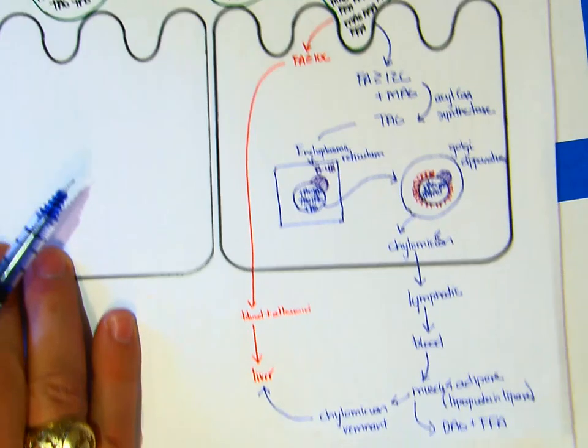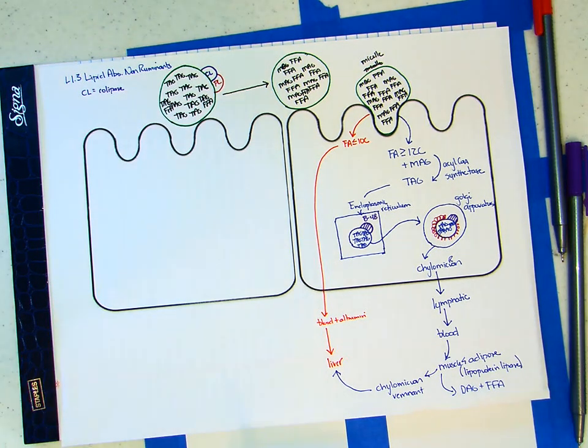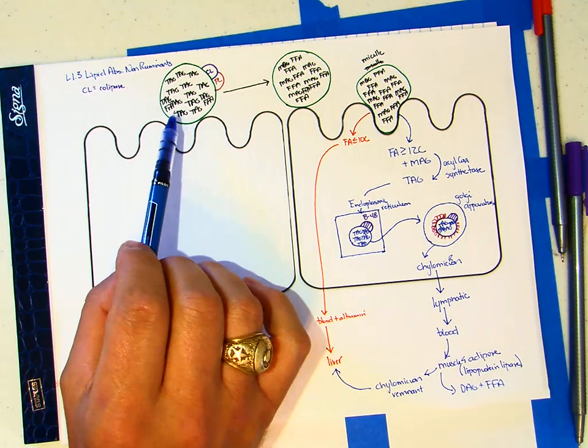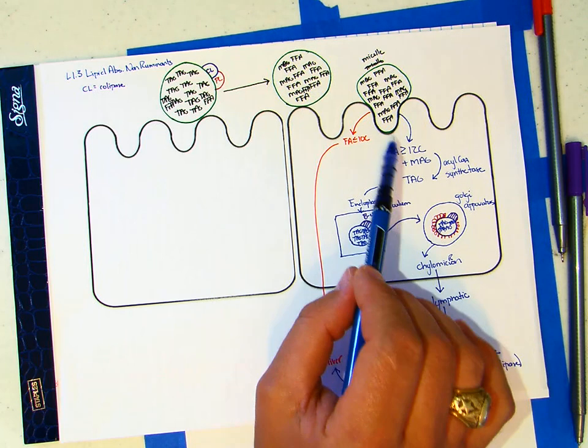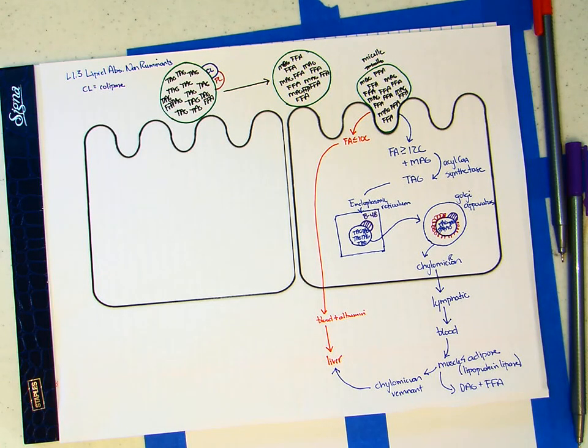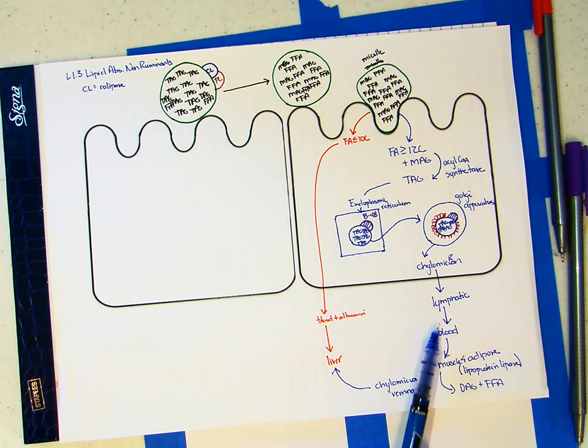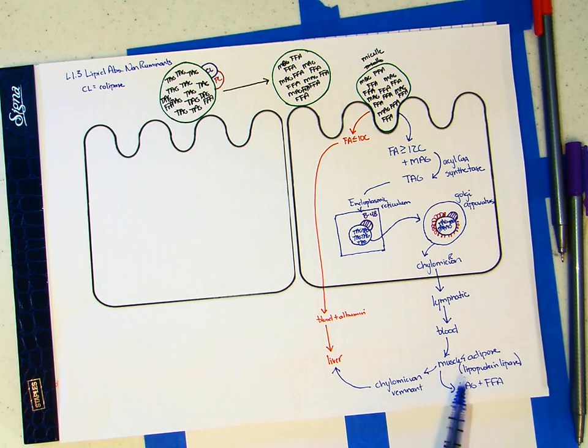It's real important that you have a pretty good understanding of what happens from TAG getting into mag and free fatty acids, the differences between the 10 carbons and the 12 carbons, how 12 carbons or greater are used for intracellular reformation of TAG, what happens in the endoplasmic reticulum and Golgi apparatus. Make sure you know chylomicron goes to the lymphatic, not the blood, then to the blood, then to muscle and adipose where lipoprotein lipase recognizes B48, hydrolyzes one free fatty acid from a TAG to make a DAG. Those get absorbed and reformed into TAG in the muscle and adipose, and then the chylomicron remnant is removed by the liver.